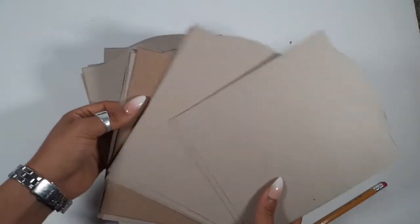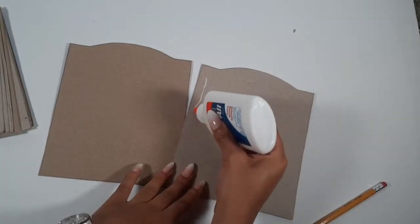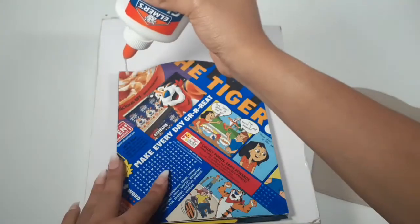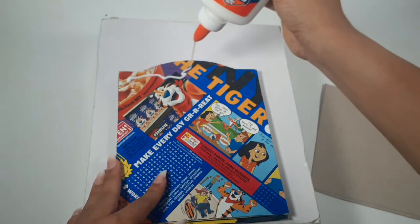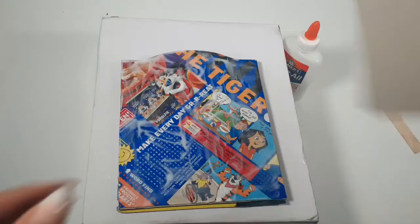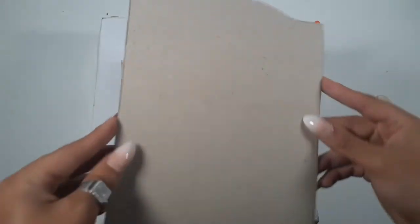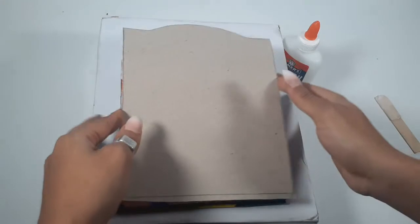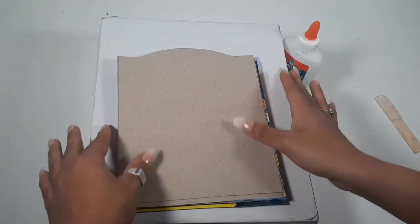When you have your desired thickness, you can start gluing it together. We're going to be painting it anyways, but I tend to cover the back when painting on the print, the paint seems to just scratch off much easier. Once the glue dries, we can start sanding everything smooth.